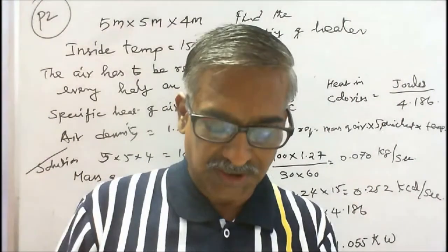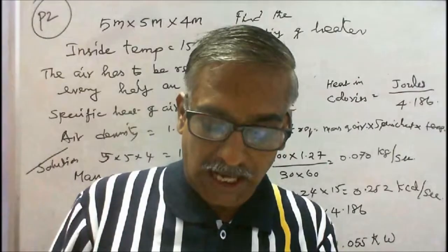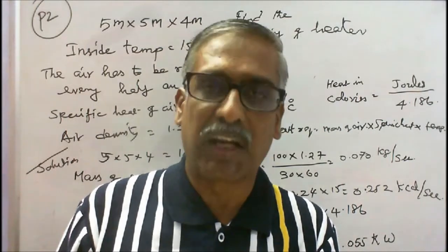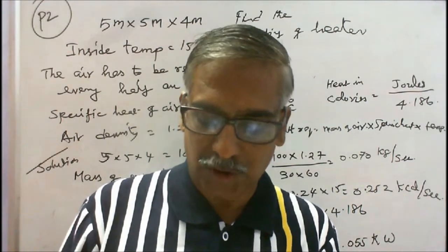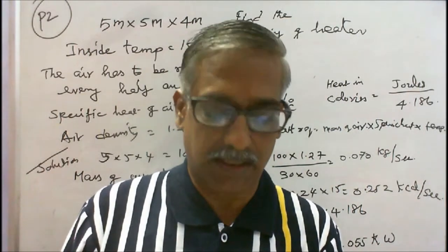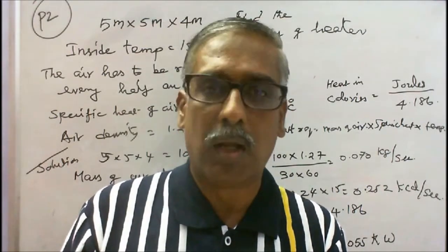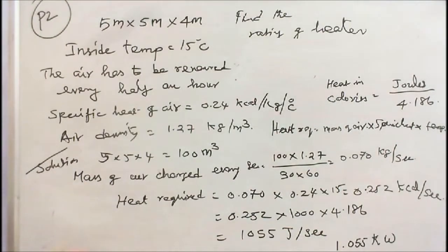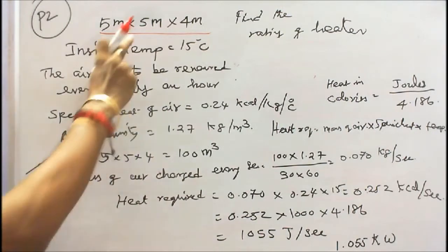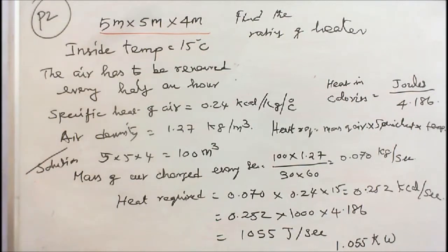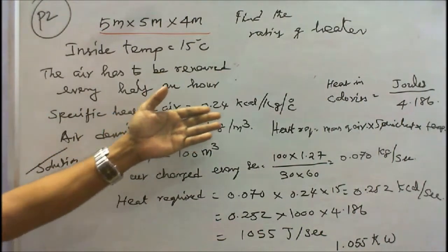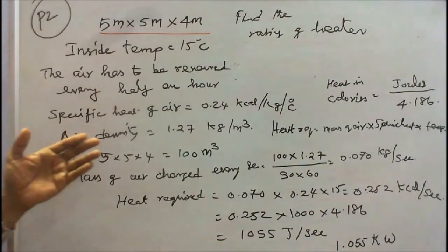Second problem: A room measuring 5 meters by 5 meters by 4 meters has to be heated by keeping the inside temperature 15 degrees centigrade higher than that of incoming air. The air has to be renewed every half an hour. Specific heat of air equals 0.24 kilocalories per kg per degree centigrade. Density of air equals 1.27 kg per meter cube. Find the heater rating, neglecting radiation losses. In this problem, the room dimension is given 5m × 5m × 4m, so we can easily find its volume. Inside temperature is given 15°C. Air has to be renewed every half hour, and specific heat of air is given 0.24 kcal/kg/°C, and air density is given 1.27 kg/m³.